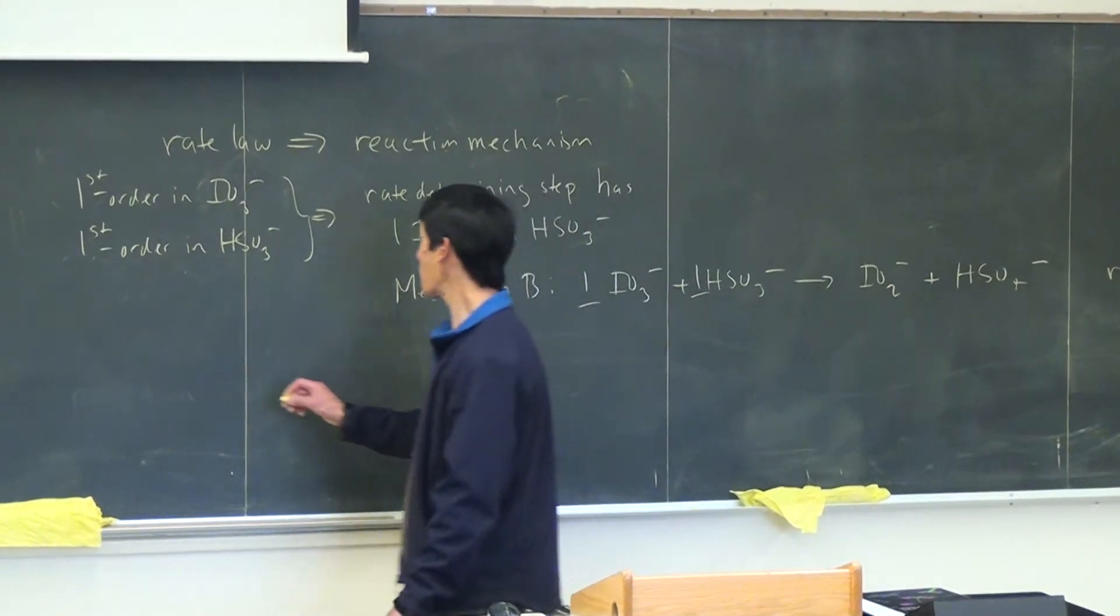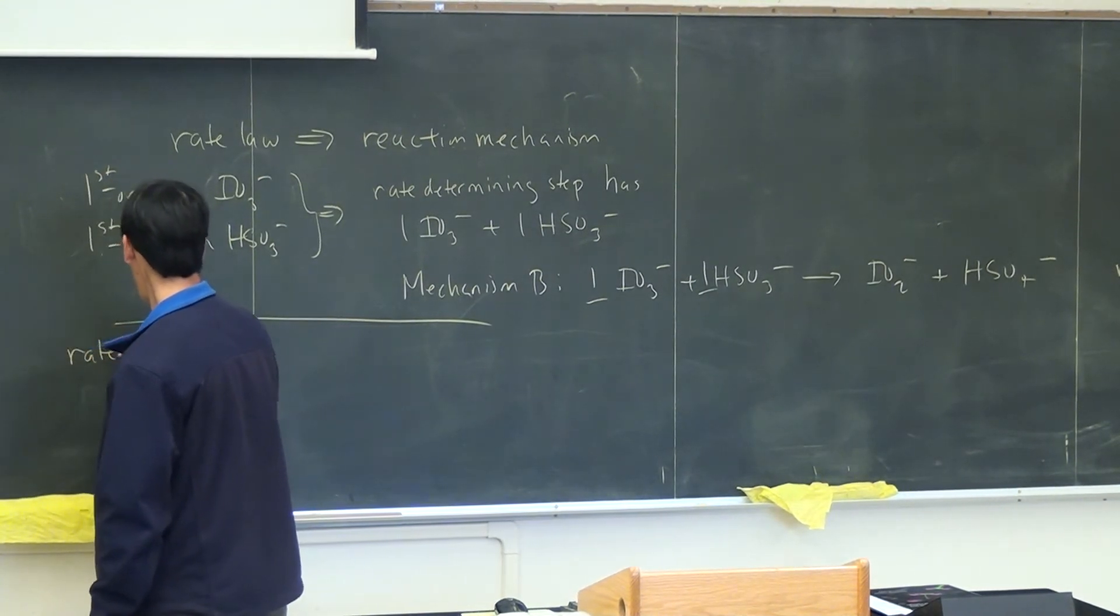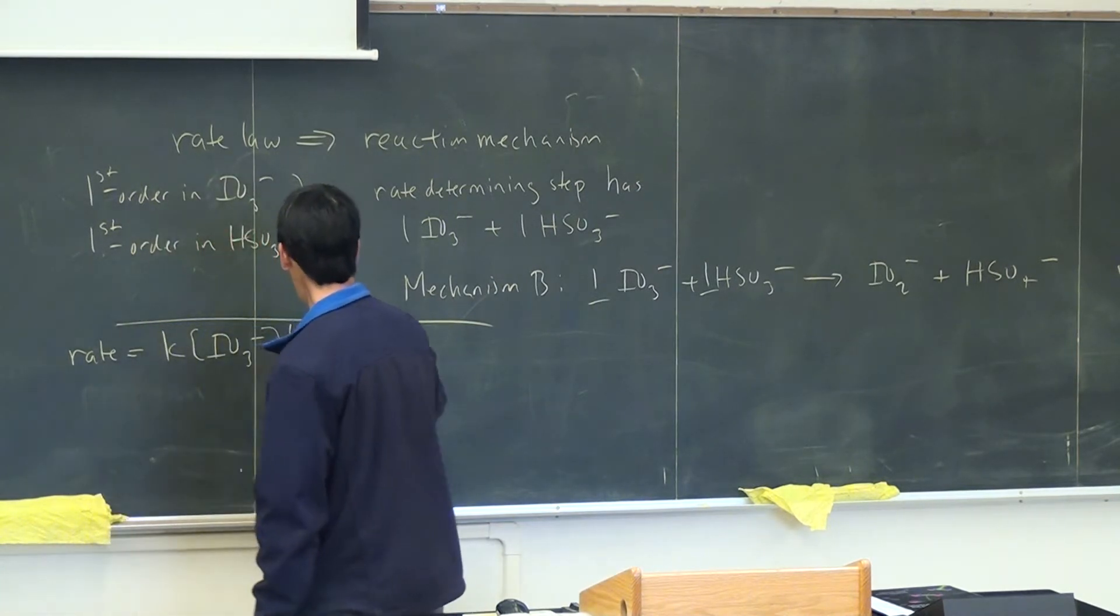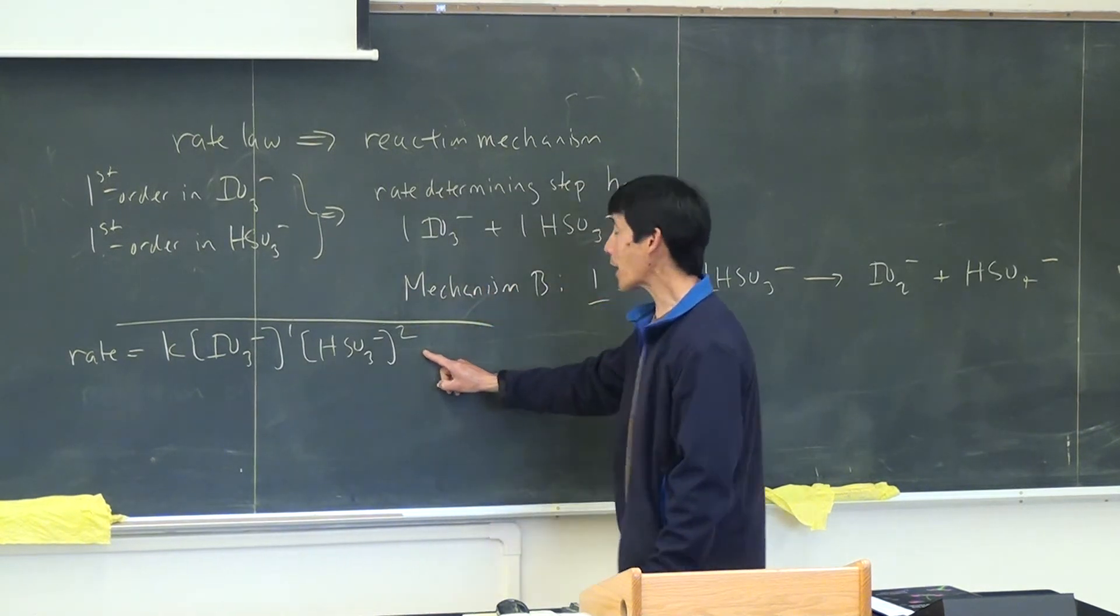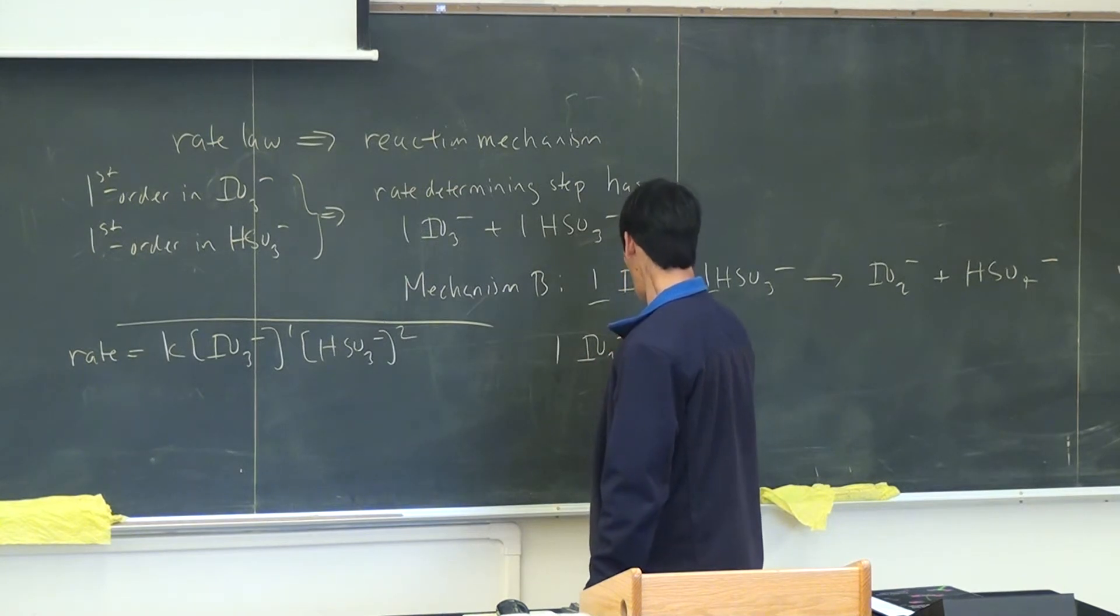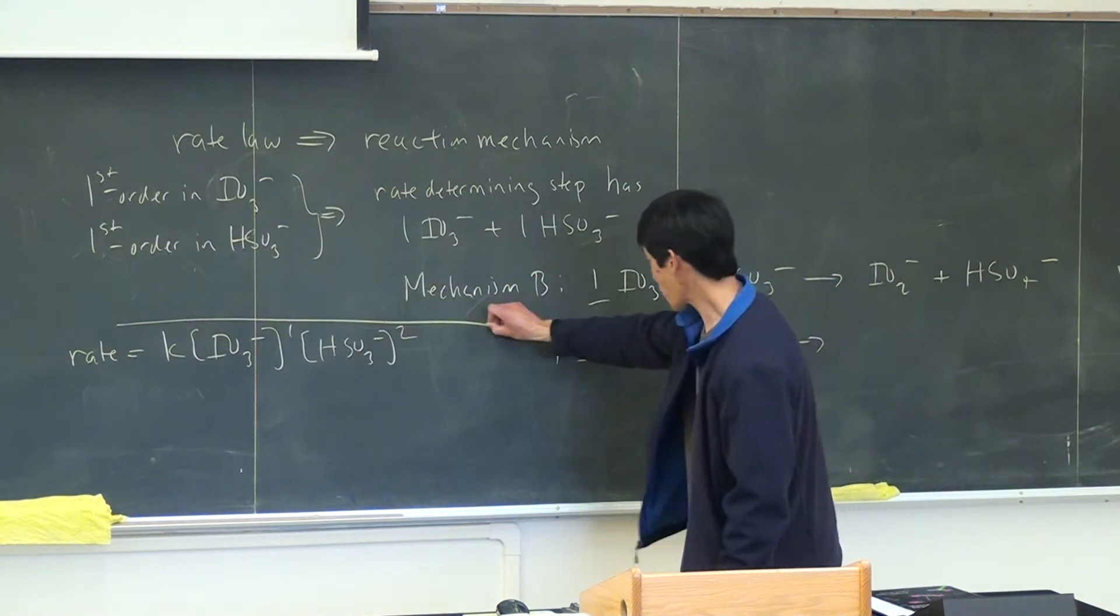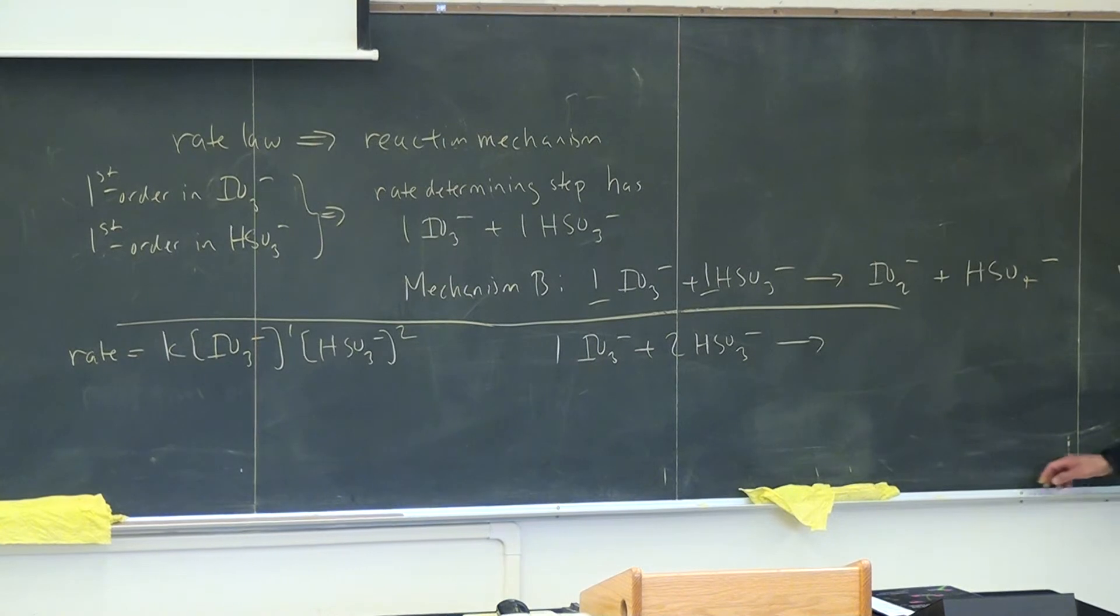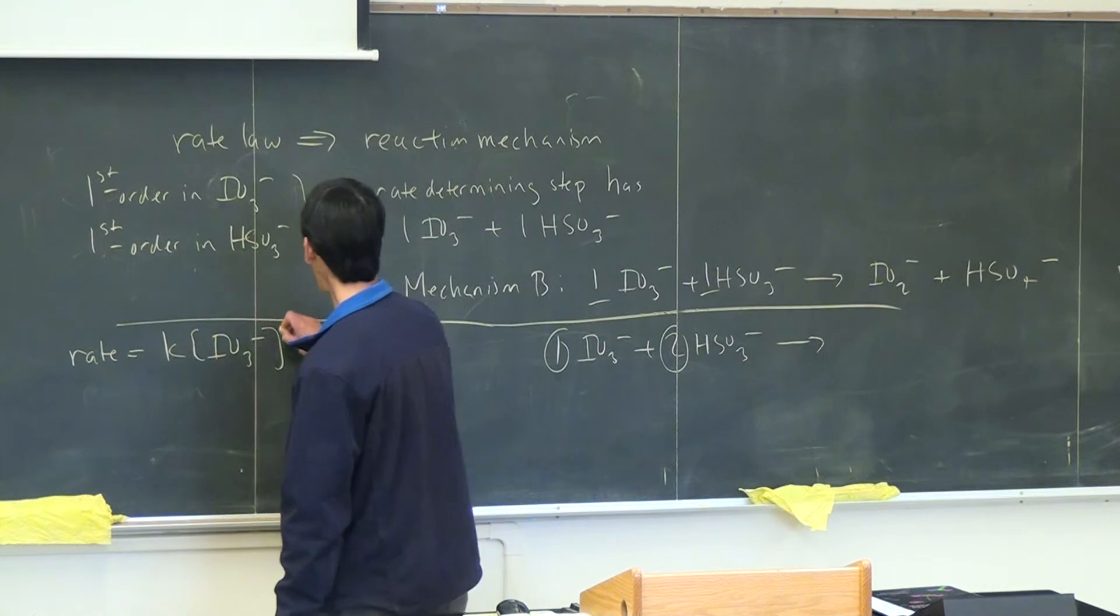let's say if it was, let's say if the rate law showed it was K times IO3 minus times HSO3 minus squared, that means the reaction mechanism for the rate determining step would have one IO3 minus plus two HSO3 minus to make the product. So these numbers here have to match the order of the reaction.